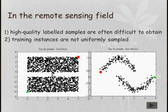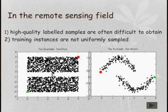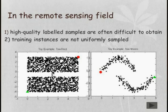First, about the problems of supervised learning. We know in the remote sensing field, high-quality labeled samples are often difficult to obtain. Also, the training instances are not uniformly sampled. Here is an example: the red and the green ones are labeled samples, while all others are unlabeled samples.